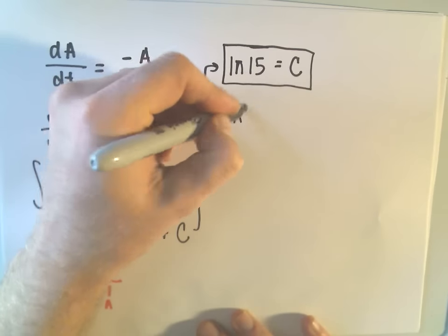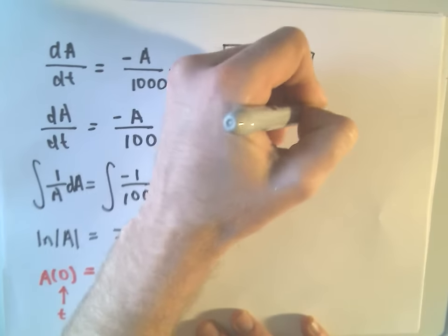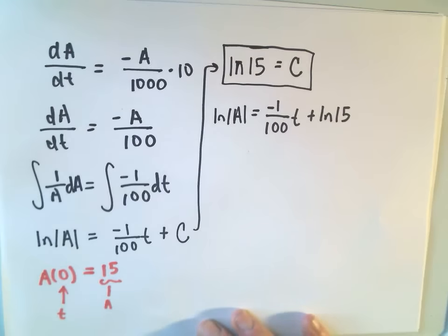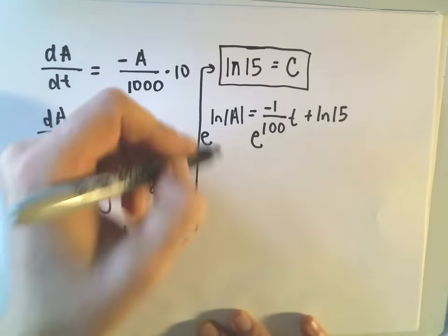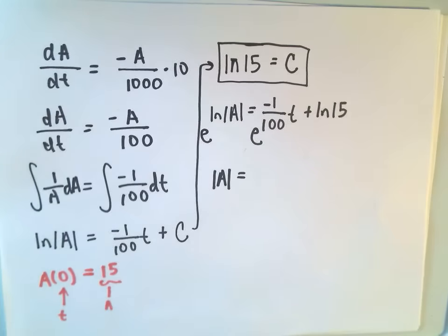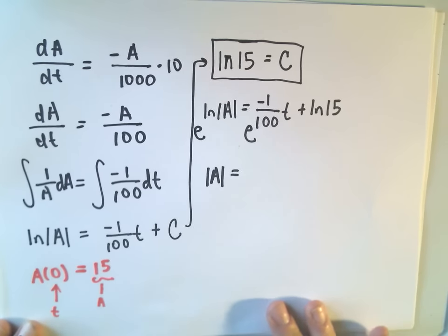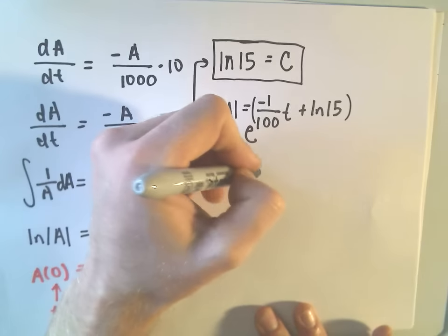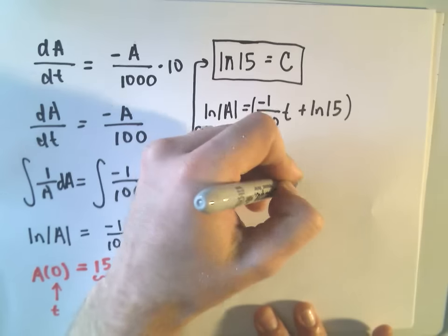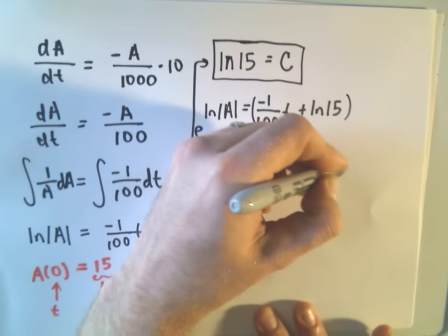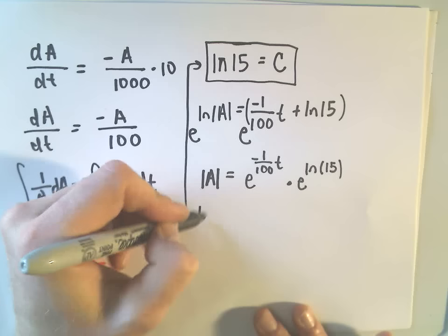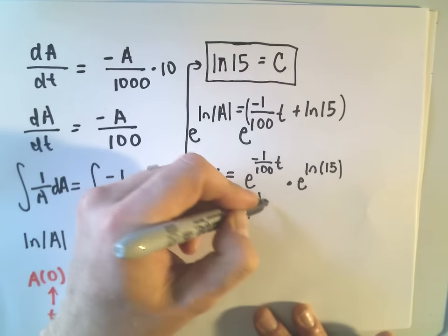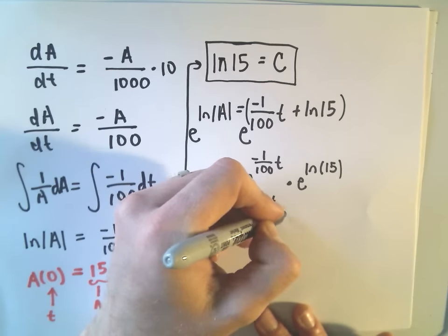So it says ln of a equals negative 1 over 100 t plus the natural logarithm of 15. And at this point, just to get rid of the natural logarithms, we exponentiate both sides. So I'll do both sides. On the left, we're just left with our absolute value of a. I'm going to break up the right side. Be careful here. I think when I see people make an algebra mistake, this is probably where they do it. So e to the negative 1 over 100 t times e to the ln of 15. Okay, don't turn it into addition. It would be multiplication when you break it up, right? We've got like bases. If you add the exponents, that would certainly give us what's right above it. So we've got e to the negative 1 over 100 t, and then e to the ln of 15 is just 15.